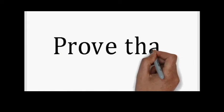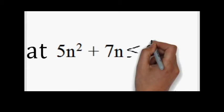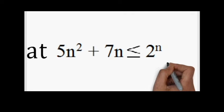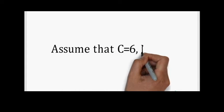Today we are going to prove by induction the equation 5n squared plus 7n is less than or equal to 6 times 2 to the power of n. We are going to assume that c equals 6 and n₀ is 5.